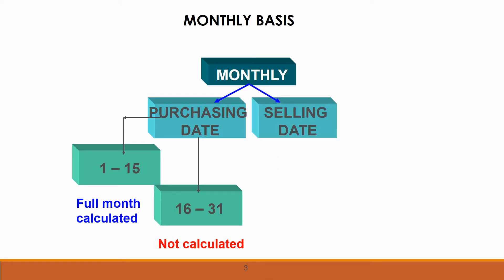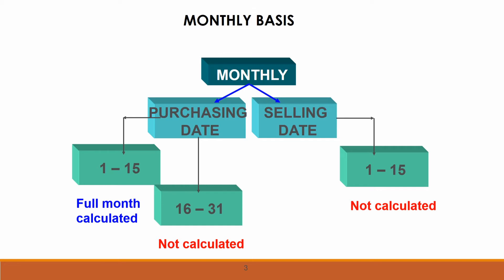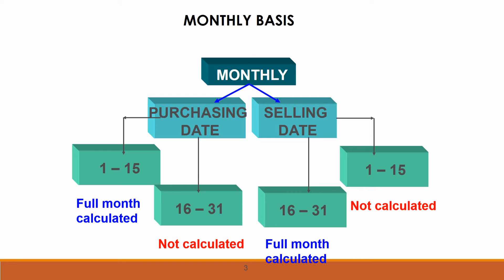When we want to calculate depreciation at the point of selling the fixed asset, we calculate from the beginning of the accounting period until the selling date. From the 1st to the 15th of the month, we do not include that month. But from the 16th to the 31st, we must include a full month. In summary: for purchasing, calculate depreciation from the purchase date to the end of the period; for selling, calculate from the beginning of the period to the selling date.